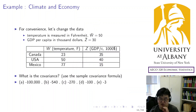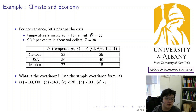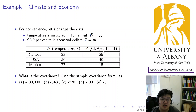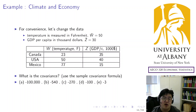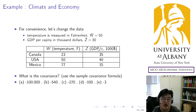Now we are going to do an experiment and study the properties of the covariance. We will change the unit. In the original data, temperature was measured in Celsius and GDP was in dollars. Now I will change the temperature into Fahrenheit, and change the GDP into thousand dollars because the numbers were too large — so I dropped three zeros.